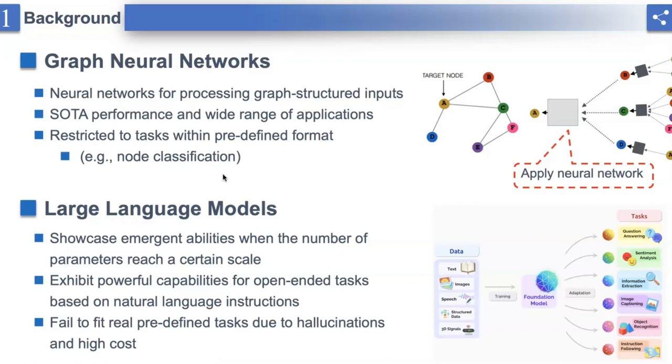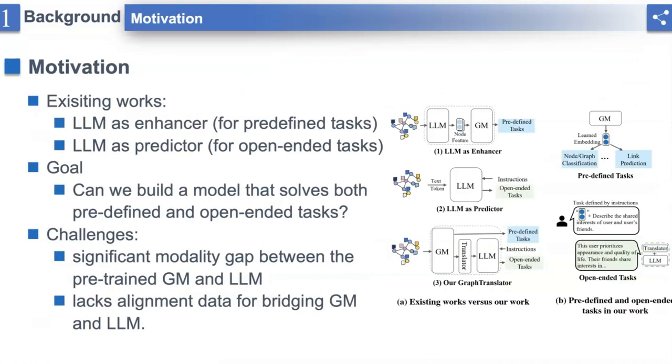However, this idea is less explored in the graph domain despite the availability of numerous powerful graph models. Though several methods applying LLMs to graphs have been proposed, they fail to simultaneously handle predefined and open-ended tasks with LLMs as the node feature enhancer or standalone predictor. It naturally raises the question: can we build a model that can solve both predefined and open-ended tasks? To answer this question, we propose to align the pre-trained graph model to LLMs.